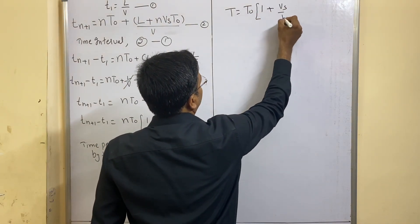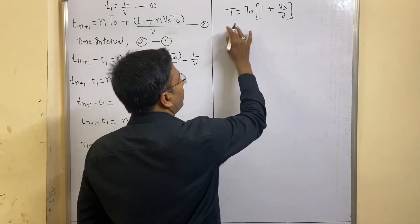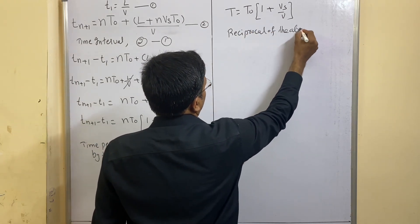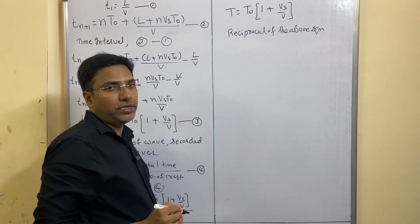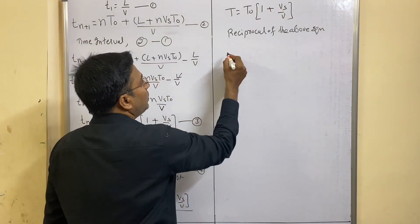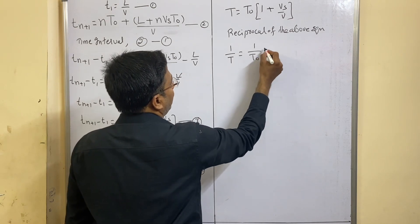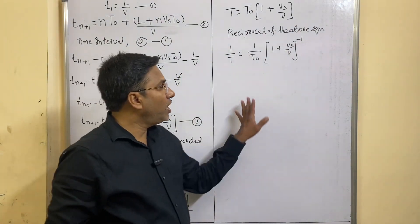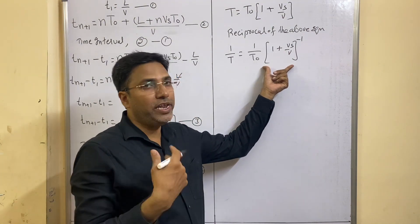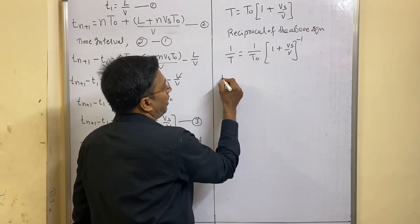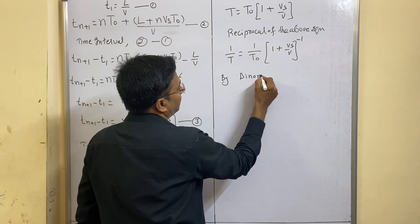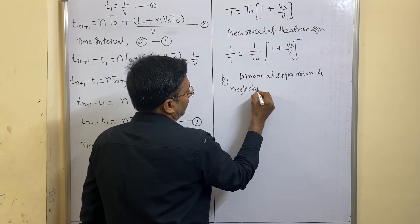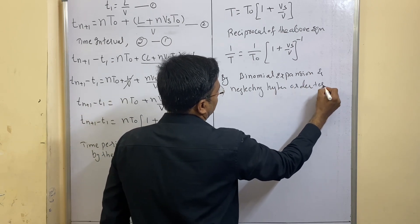What is left: T = T0(1 + Vs/V). Now let us take the reciprocal of this equation to convert time period into frequency. Taking the reciprocal: 1/T = (1/T0) × (1 + Vs/V)^(−1). Now we apply binomial expansion to the last term and ignore the higher order terms.